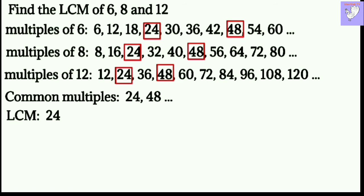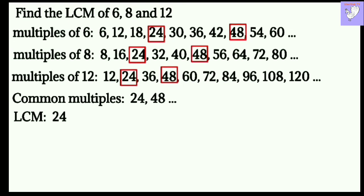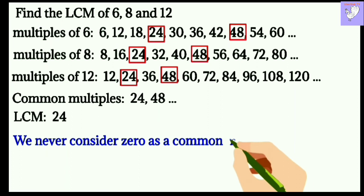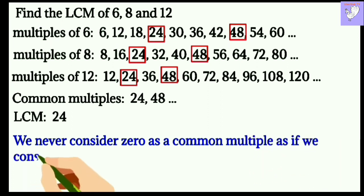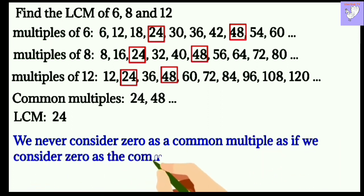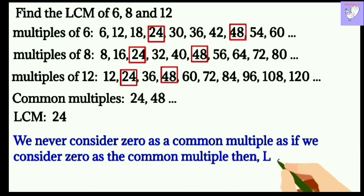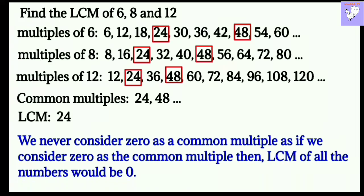Now, you must be wondering why 0 is not considered as a common multiple. Well, we never consider 0 as a common multiple because if we consider 0 as the common multiple, then LCM of all the numbers would be 0.